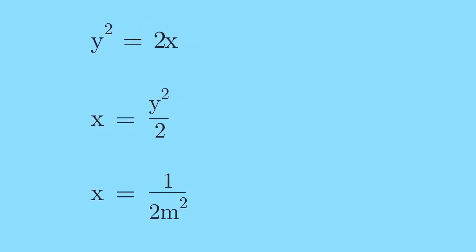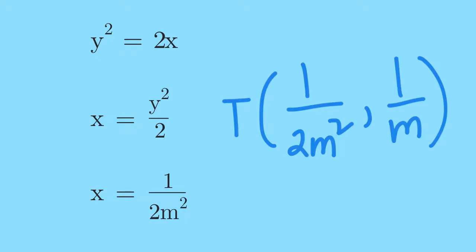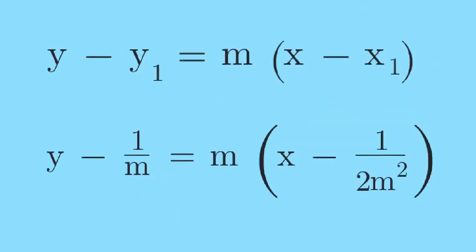We now know that the point of tangency of any of the tangent lines is at 1 over 2m squared, 1 over m. We will substitute this to the point-slope form of the equation of a line. We have replaced y sub 1 by 1 over m from the point-slope form of the equation of a line, as well as x sub 1 by 1 over 2m squared. The slope is replaced by m.